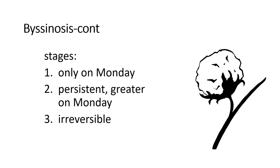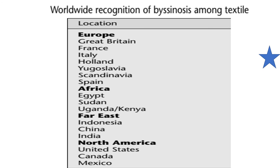Continued byssinosis stages: first symptoms occur only on one day (Monday), then persistent and greater on that one day, then irreversible across all weekdays. Worldwide recognition of byssinosis among textile workers is present in Europe, Africa, Egypt, Far East, Indonesia, China, India, North America — United States, Canada, and Mexico.